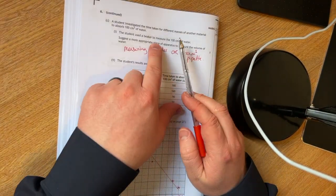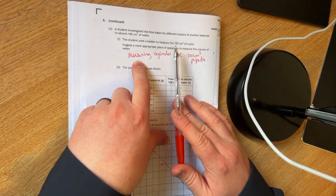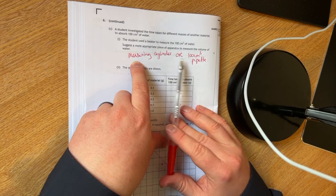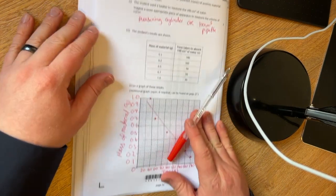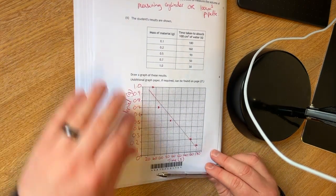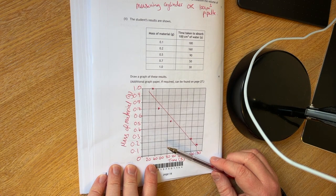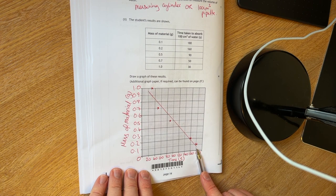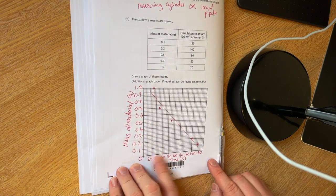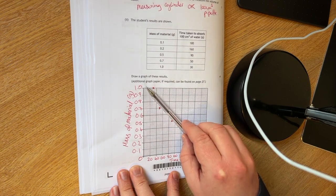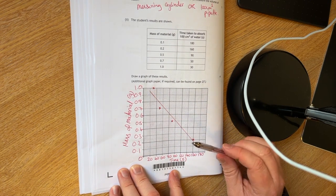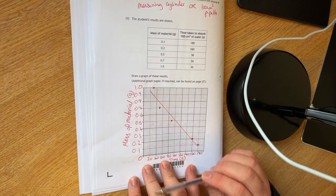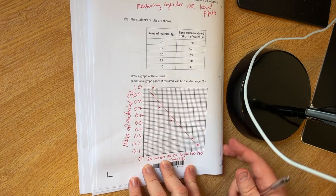A student investigated the time taken for different masses of another material to absorb 100 cm3 of water. The student used a beaker to measure the 100 cm3 of water. Suggest a more appropriate piece of apparatus. You can say a measuring cylinder or a 100 cm3 pipette. This one here, you've just to plot your results. I always like to put time on the bottom. However, I think there's an argument here for potentially putting time along the y-axis and mass along the bottom.